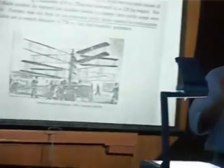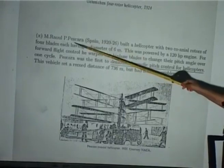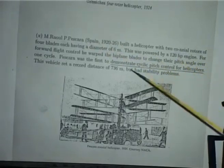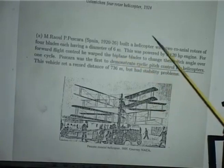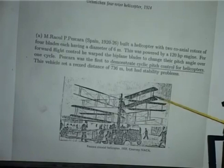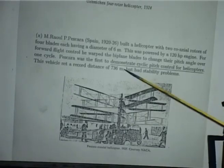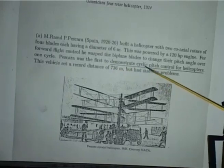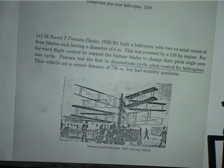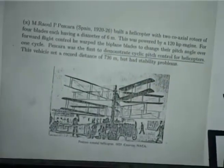In Spain in 1926, Raul Pescara built a helicopter with two coaxial rotors of 4 blades each, 6-meter diameter, powered by a 120 HP engine. For forward flight control he warped the blades to change their pitch angle — he was the first to demonstrate cyclic pitch control. The vehicle set a distance of 736 meters, but again had stability problems.